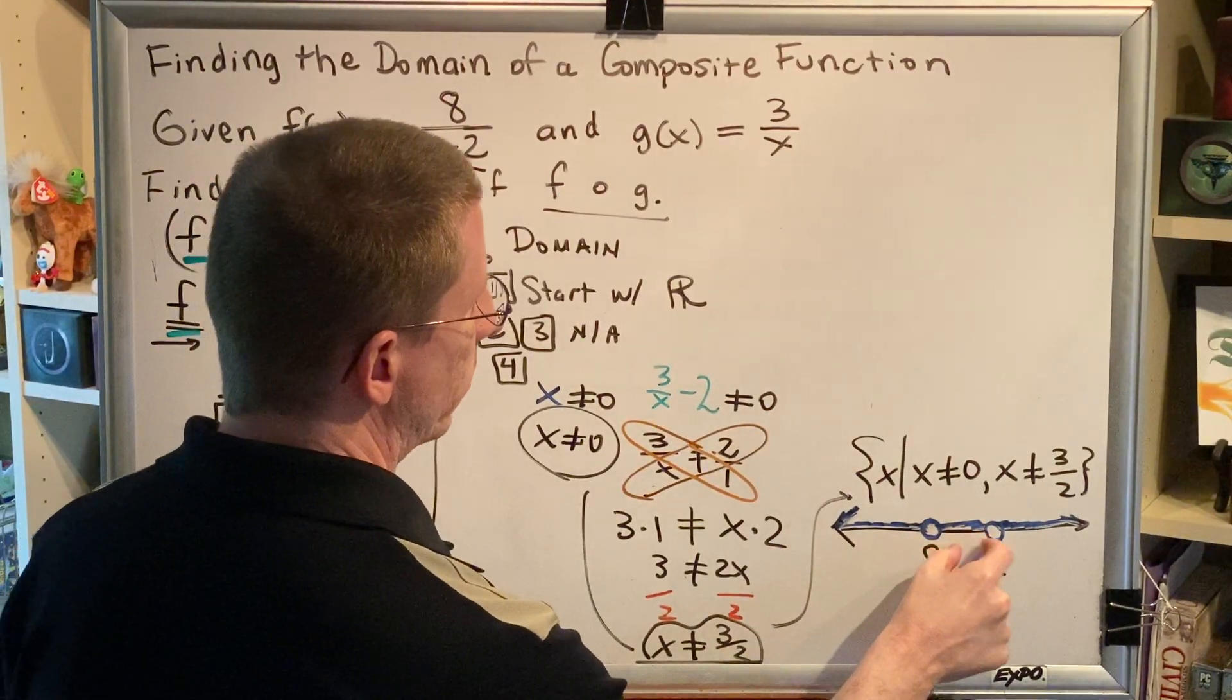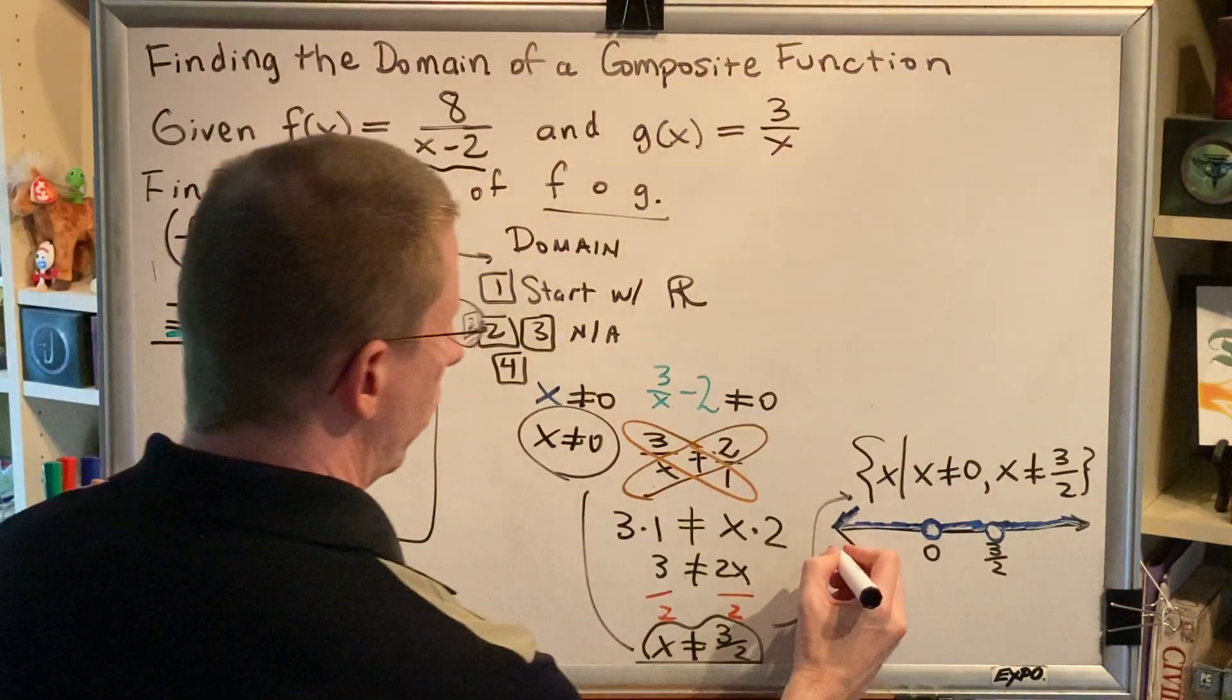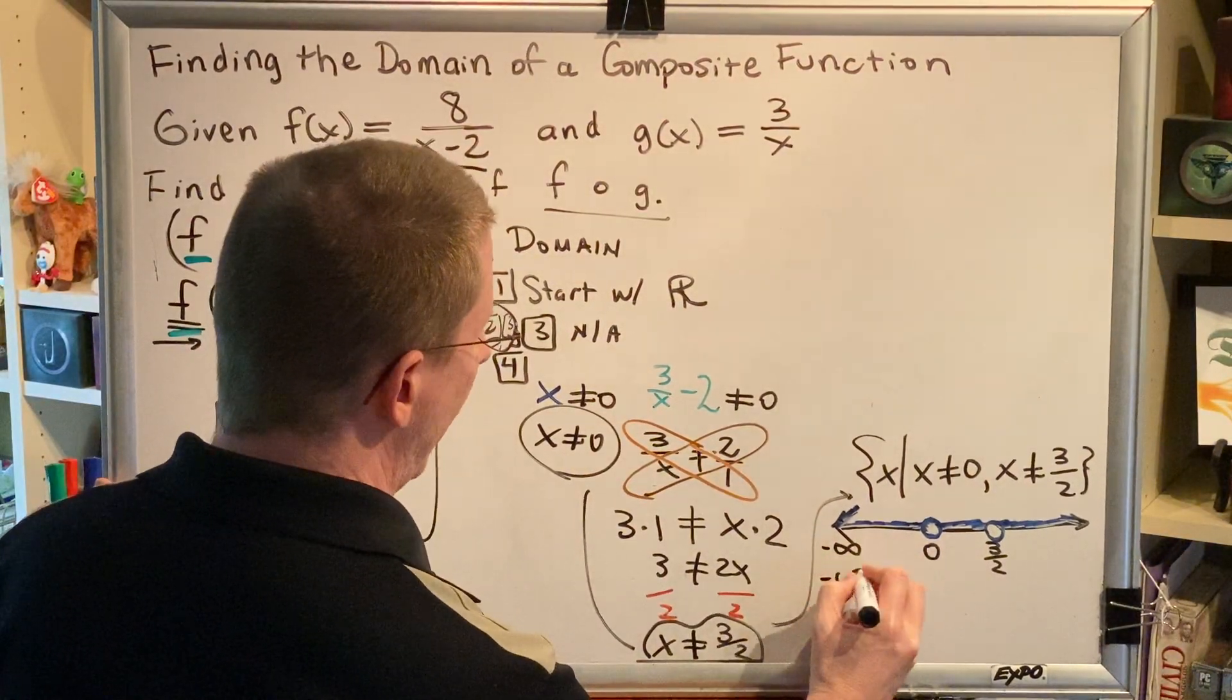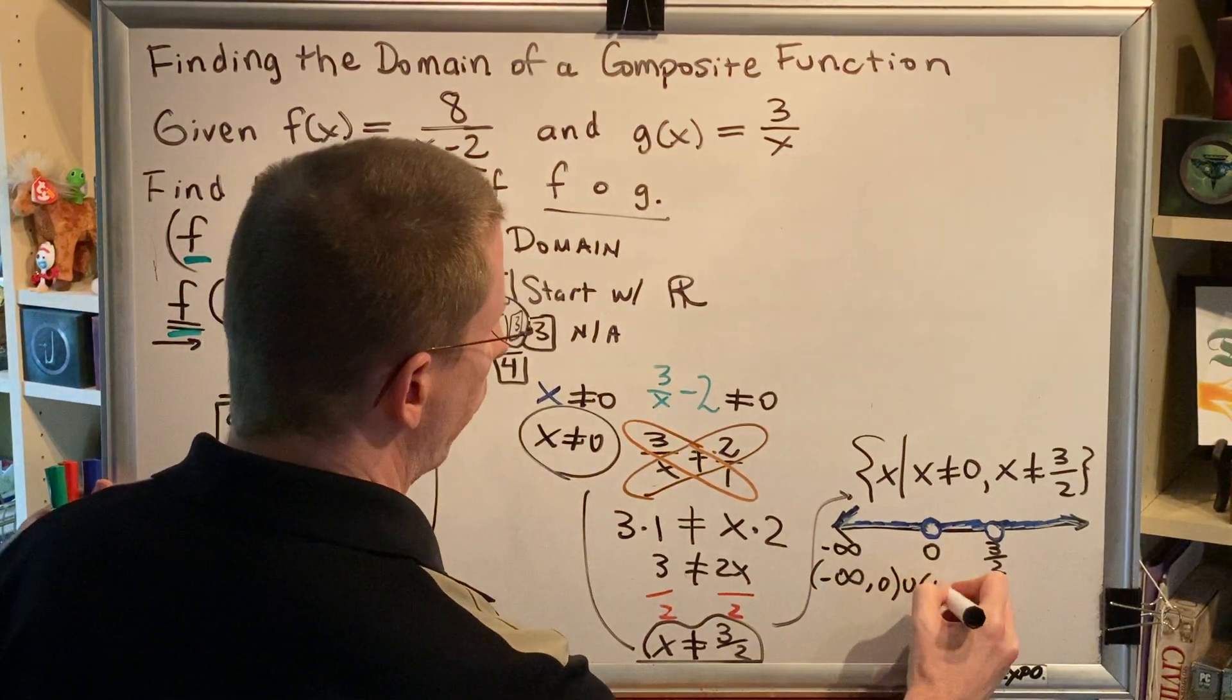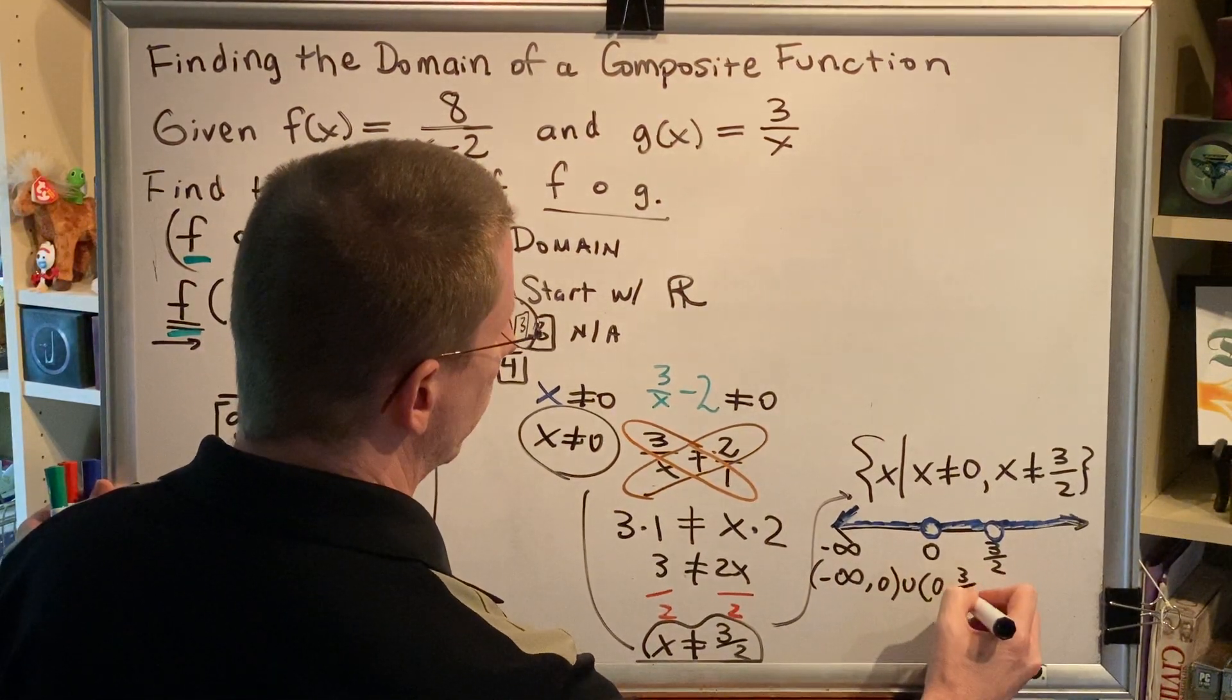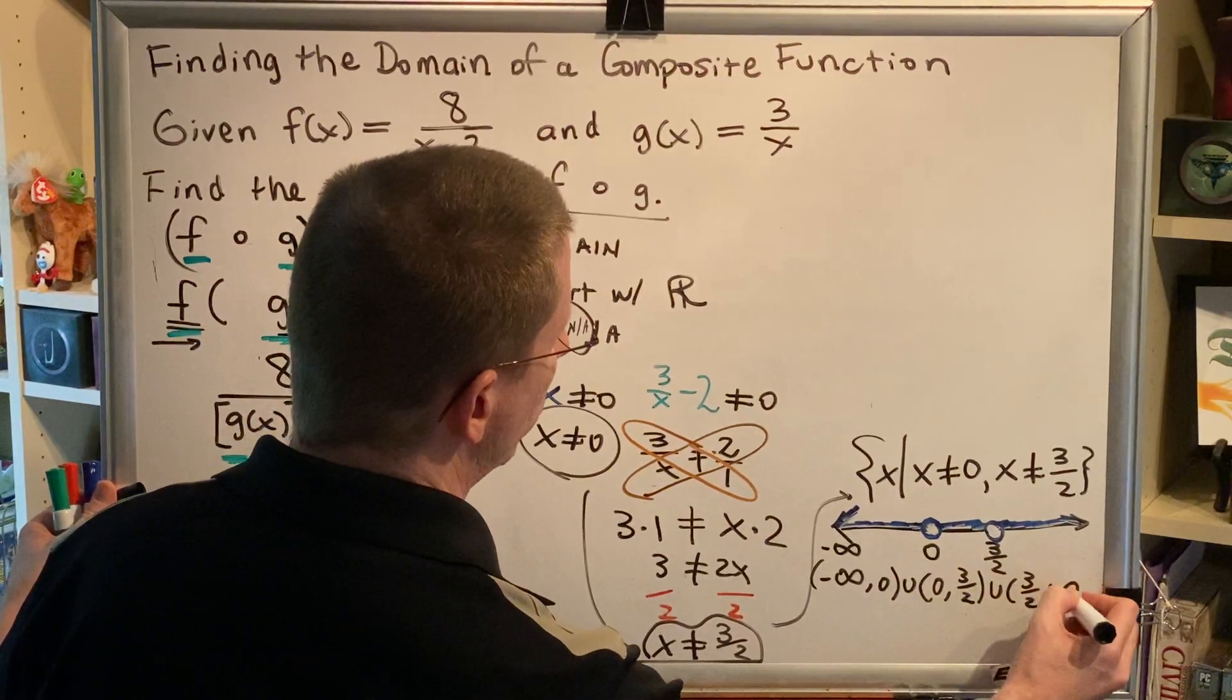This, this, and this. So when we write our interval, our interval will go from negative infinity to zero, then skip over zero and go from zero to three halves, then skip over three halves and go from three halves all the way to infinity.